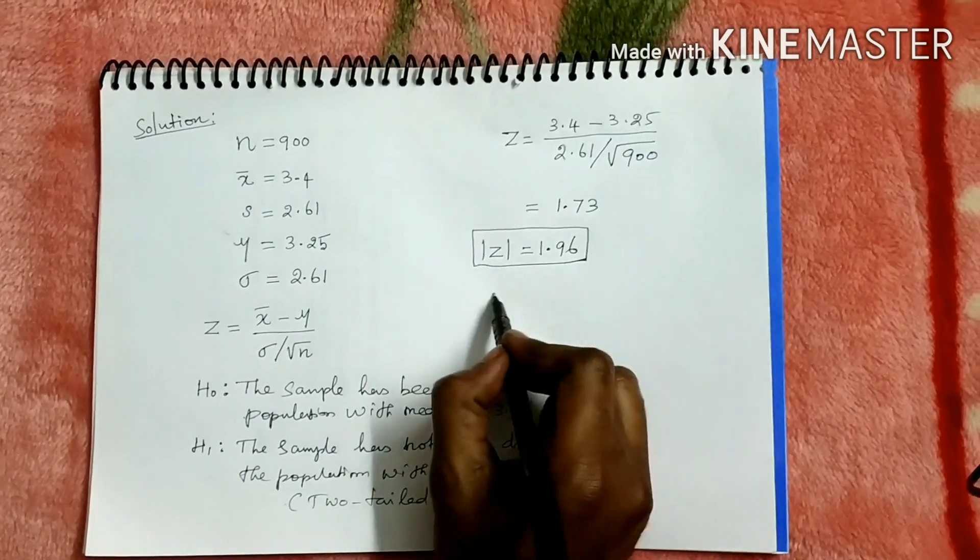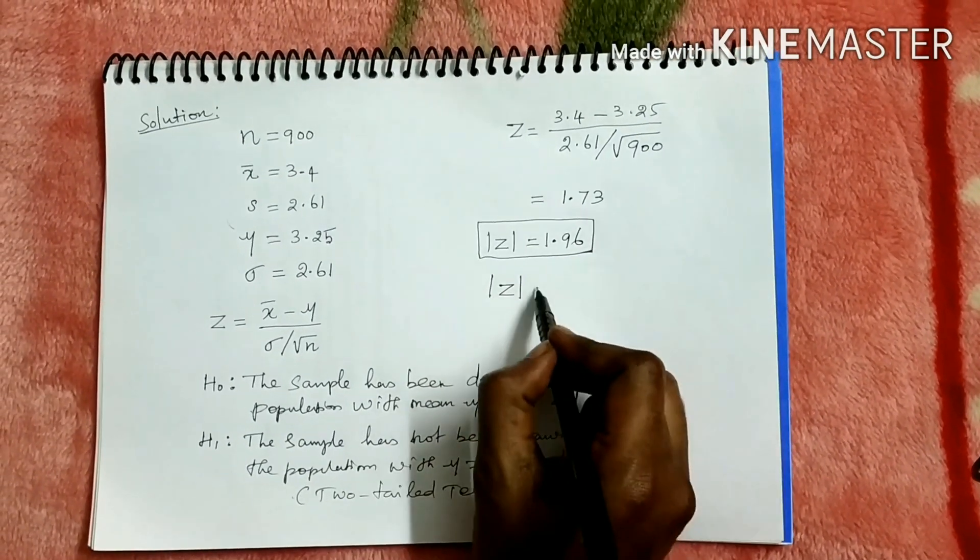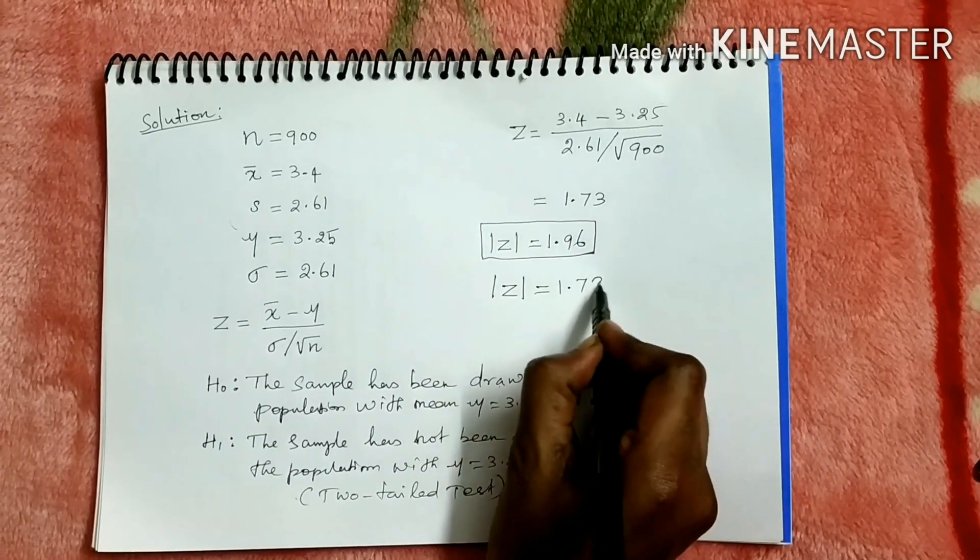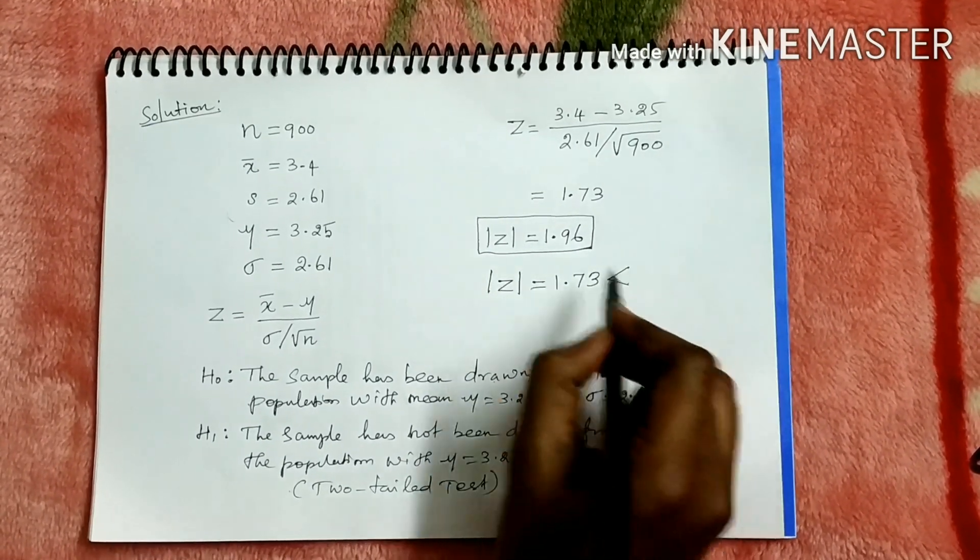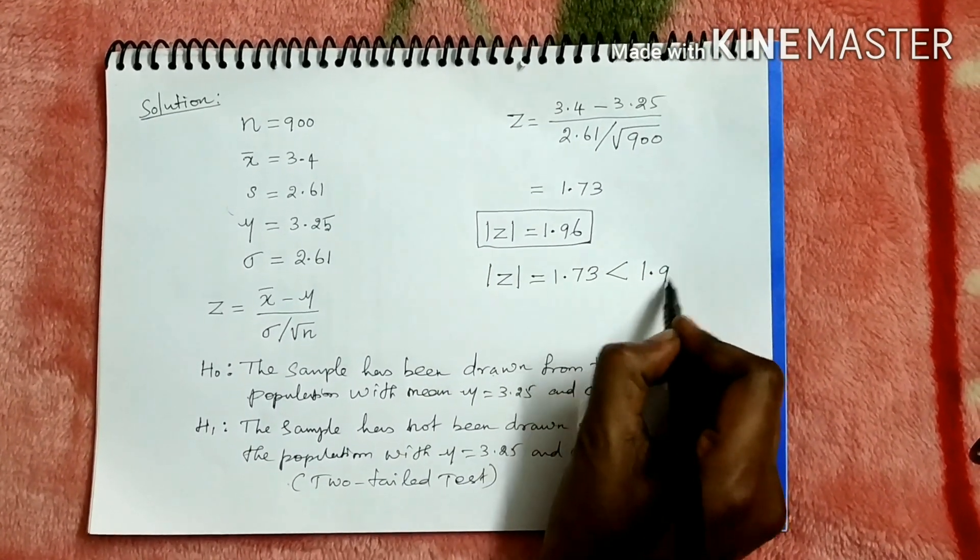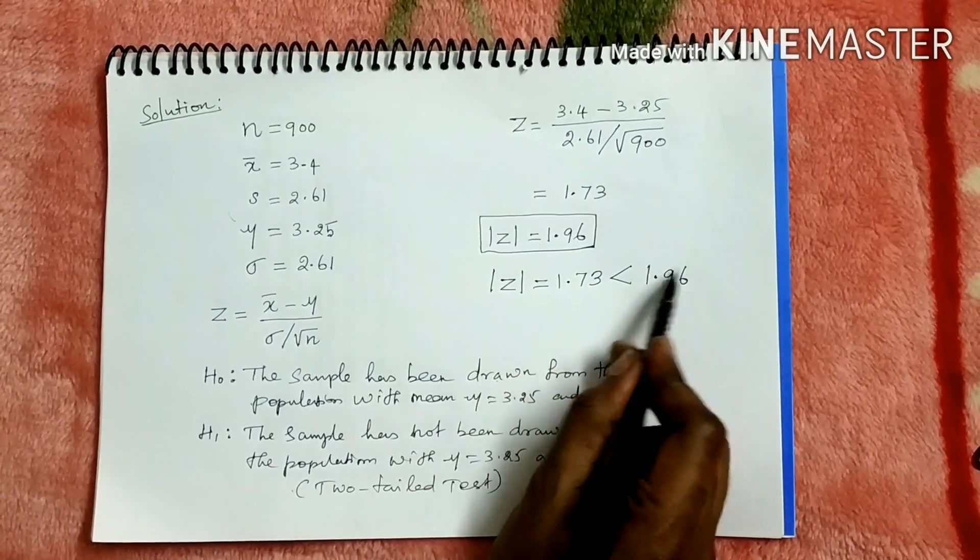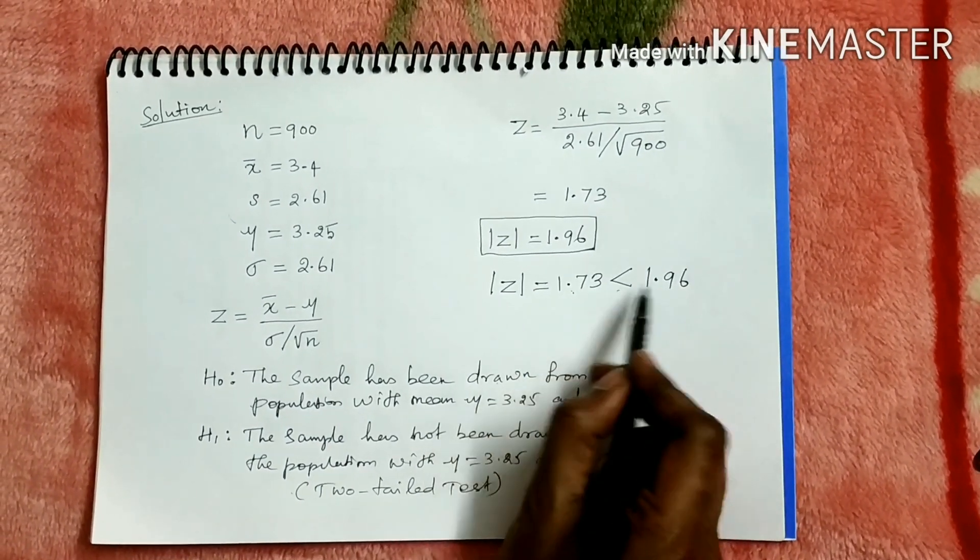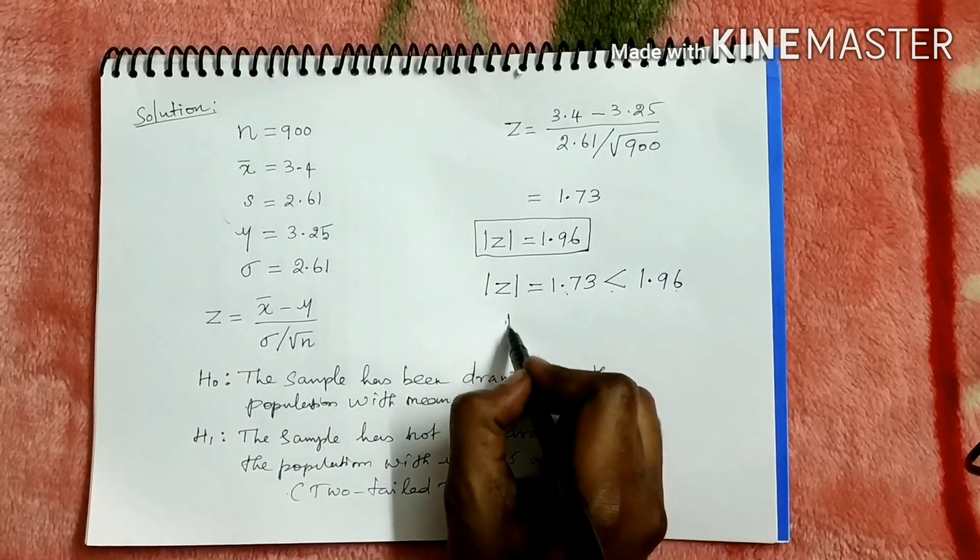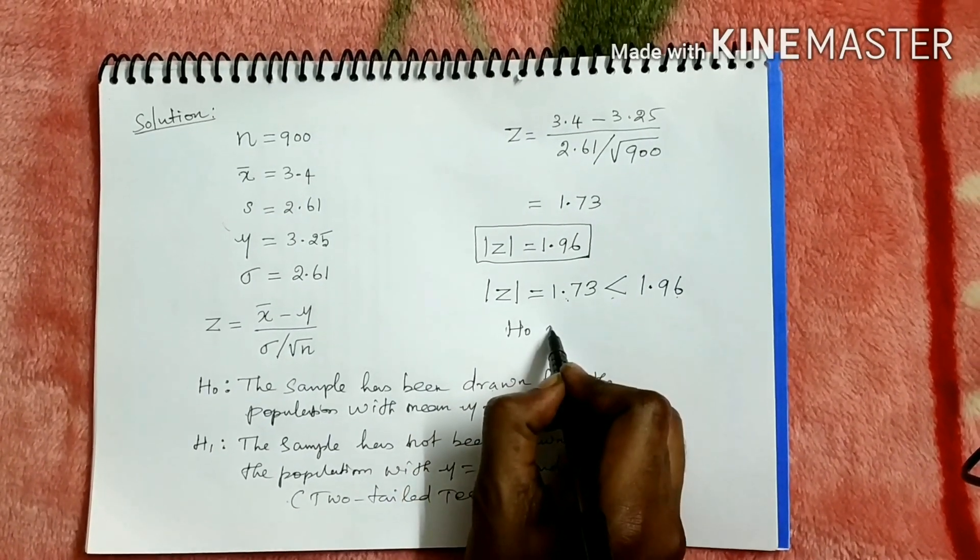Now our calculated value 1.73 is less than the table value 1.96. This is the calculated value, this is the table value. Since this is less than the table value, we have to accept the null hypothesis.